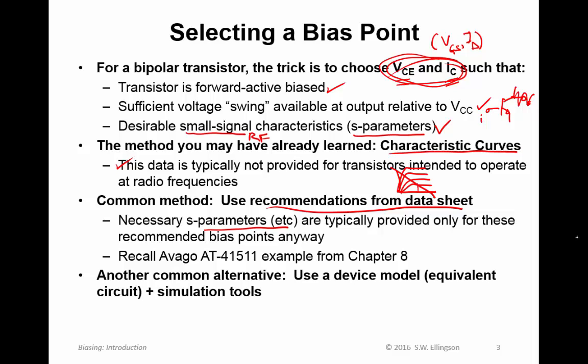Which brings us to the other common alternative for how to select bias points, which is to use a device model. Increasingly, manufacturers of transistors will provide an equivalent circuit model which is suitable for use in common simulation tools, and then you can experiment with that simulation model to get the bias point that you want and then quickly generate the S-parameters. Both these methods are in fairly common use.